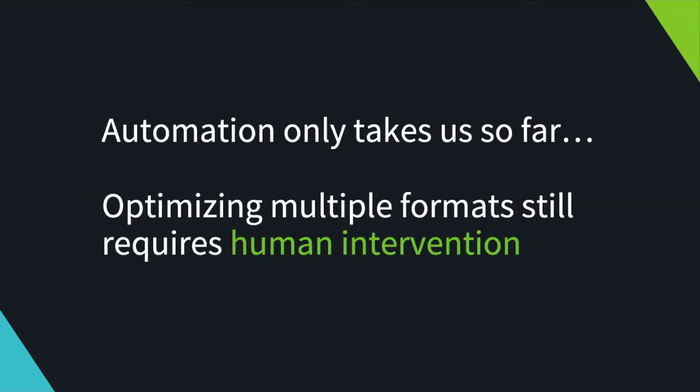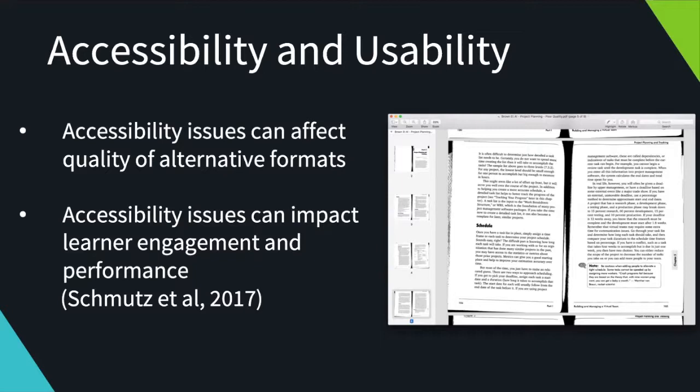Automation only takes us so far — there's only so much machine learning and AI can do to generate high quality alternative formats. It's always going to be somewhat dependent on the original, and optimizing those multiple formats still requires some human intervention, like adding description to images or adding an appropriate heading structure to a document. Accessibility and usability, in this world of personalized learning and learner preference, are really tied hand in hand. Thinking about and improving accessibility issues can have a direct effect on the quality of the alternative formats that students have access to. We know from research that accessibility issues can impact learner engagement and performance.